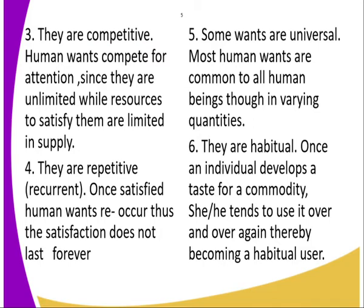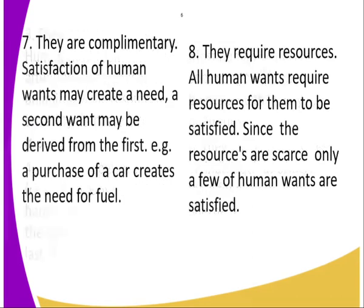Some wants are universal — most human wants are common to all human beings, though in varying quantities. For example, food, clothing, education, and shelter are shared, but they keep on varying from one person to another. Number six: they are ambitious. Once an individual develops a taste for a commodity, they intend to use it over and over again, thereby becoming an ambitious user. For example, the food that one enjoys taking becomes a habit.